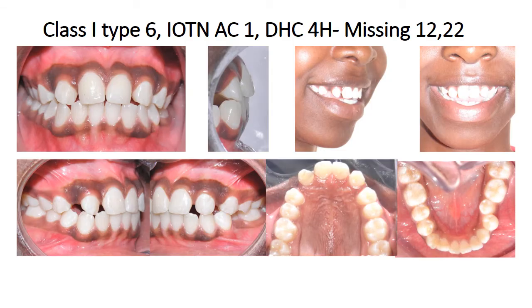This is our first case. It's called Class 1 because the molar relation is Class 1 — the upper maxillary molar, which is key to the occlusion. The mesiobuccal cusp of that tooth is sitting in the groove of the mandibular molars. The type is Type 6 because there is spacing.